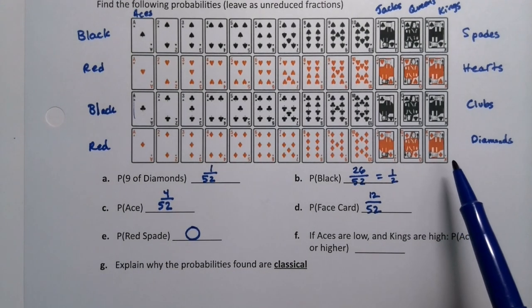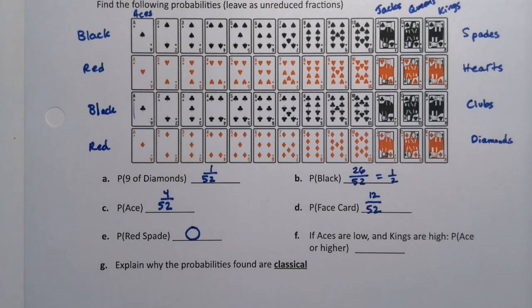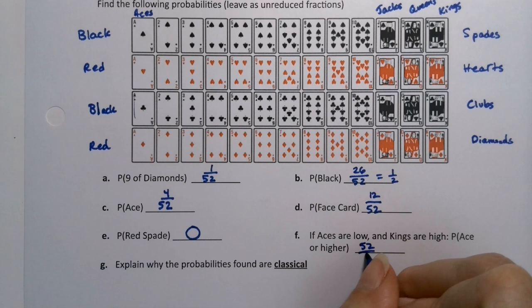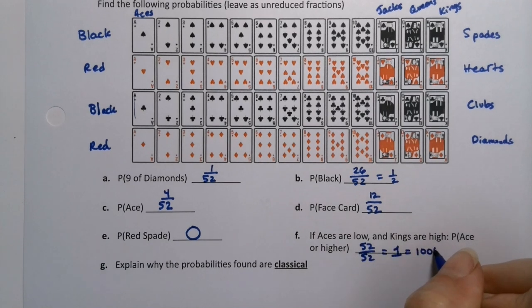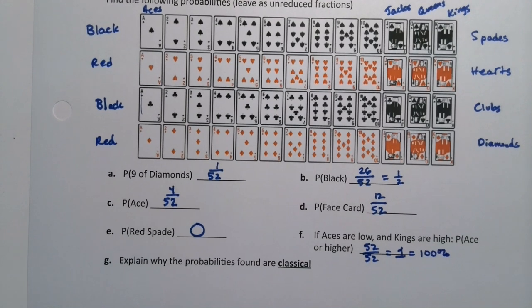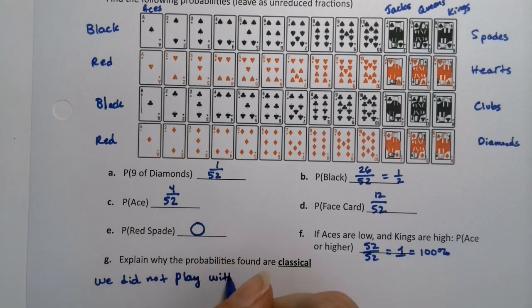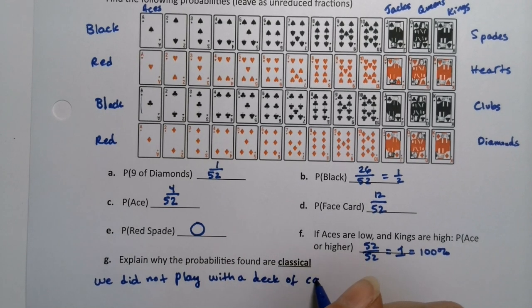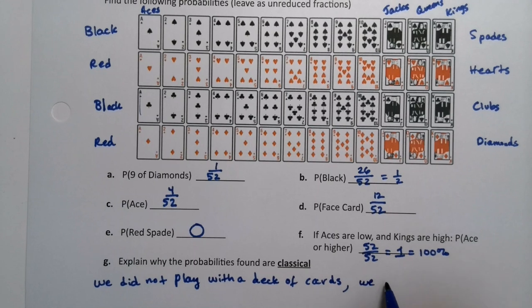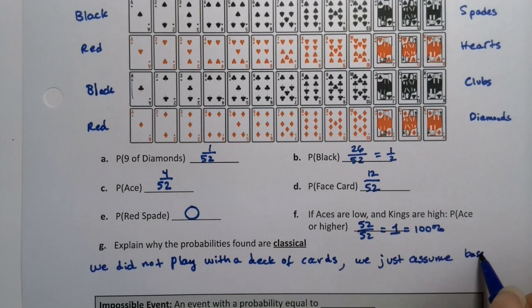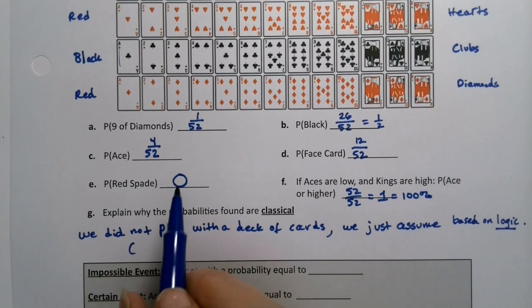If aces are low and kings are high, which is a pretty common way to arrange them for card games, then what's the probability of getting an ace or higher? Well, 100%, right? There are 52 cards out of 52 cards that are aces or higher, which would be 1 or 100%. Now, why are these probabilities classical? Because we didn't actually pull out a deck of cards and play with them — we just imagined it, we just hypothesized this based on logic.